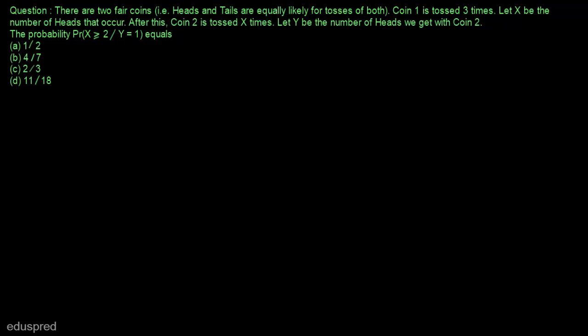Coin 1 is tossed 3 times and X is the number of heads that occur. So first, let's write the possible values of X. X is a random variable and X can be equal to 0, 1, 2, or 3. Now let's find the probability of X by writing the sample space. Because coin 1 is tossed 3 times, the sample space is as follows.